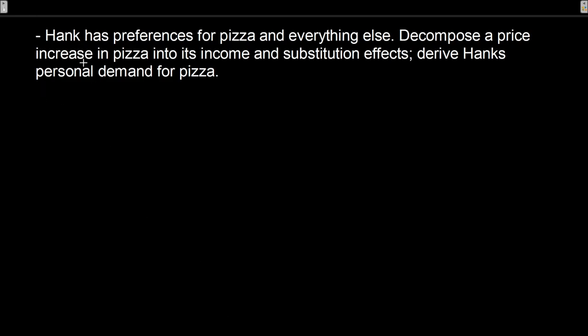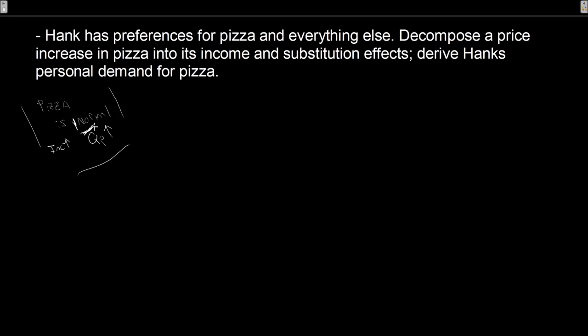There are two assumptions I need to make. First, I need to assume that Hank is a utility-maximizing individual — that's actually not a big assumption because that's our fundamental assumption about consumers. The second assumption is that I need to assume pizza is a normal good: when income goes up, quantity of pizza goes up as well. There's nothing in this question to say pizza is normal or inferior, but as the name suggests, unless we say otherwise, we have normal goods.